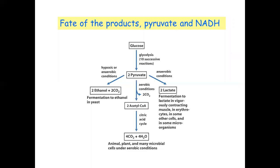But if there is an anaerobic condition, then pyruvate will convert into lactate by the process of fermentation. When anaerobic conditions are produced in the human body — for example when muscles have vigorous contraction during exercise, like when we are running intensely — one time comes when our lungs cannot supply enough oxygen, and our muscles have a large energy requirement.